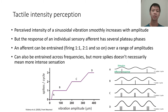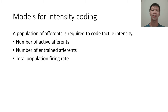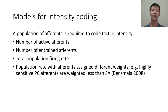There are several proposed models for coding intensity perception. One of the more recent models is based on the total spike activity across all afferents, weighted by afferent type. For example, the highly sensitive Pacinian afferents might be weighted less than the slowly adapting afferents.